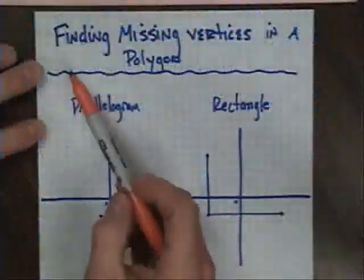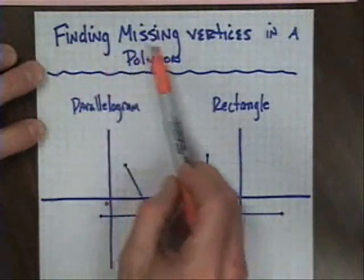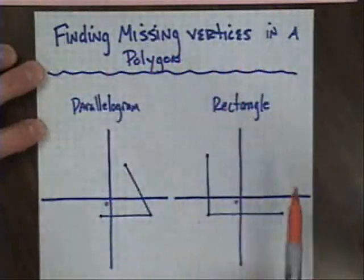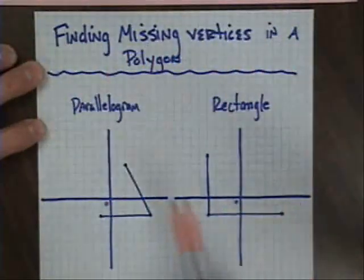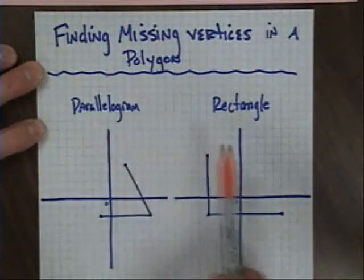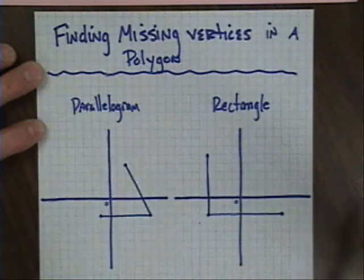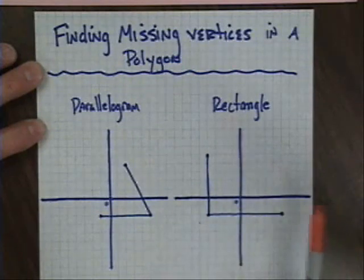In this mini lesson, I'd like to talk to you about finding missing vertices in a polygon. I have two different examples, one done with a parallelogram and one with a rectangle.